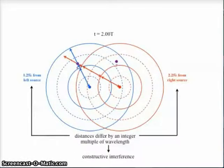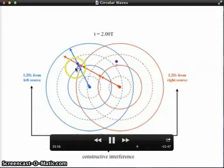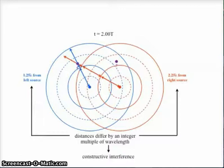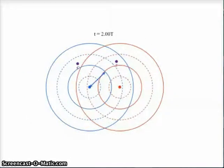Even though my diagram, the crests don't pass through C at the moment I've drawn it for, I can still pull out a ruler and measure those distances and determine that that is a location of constructive interference.